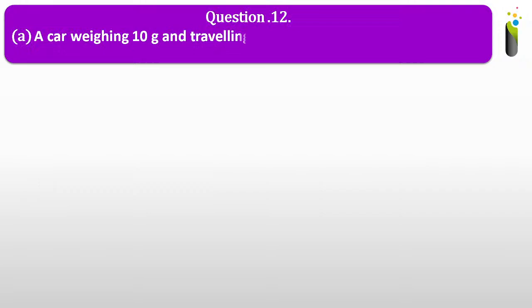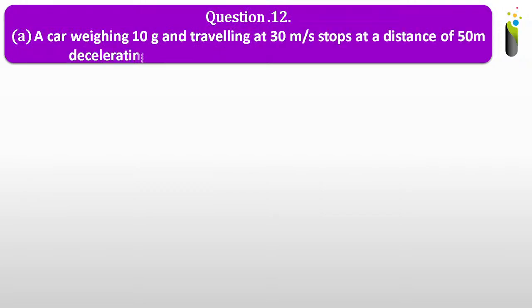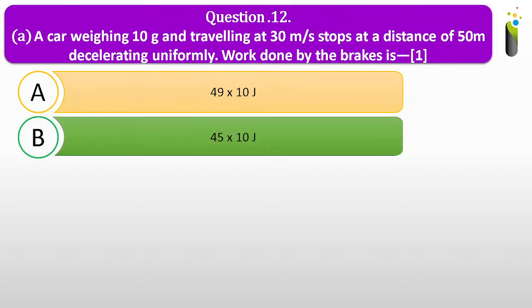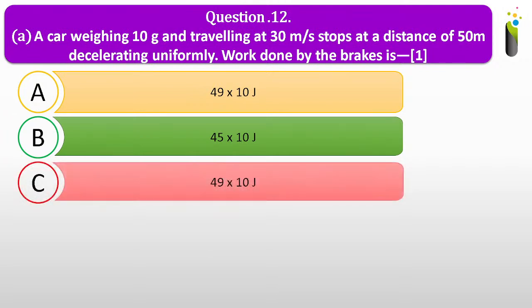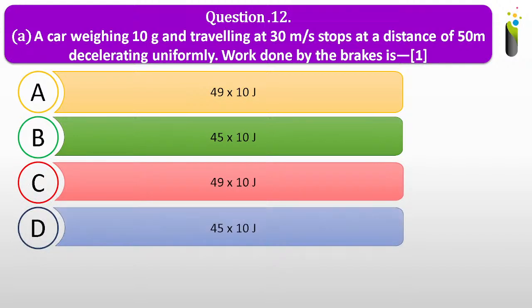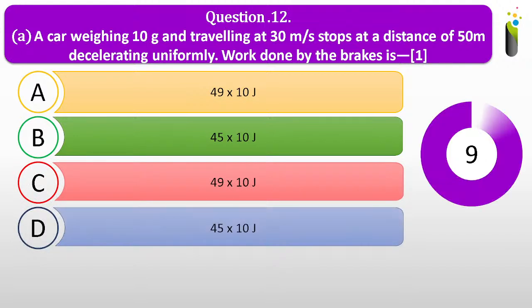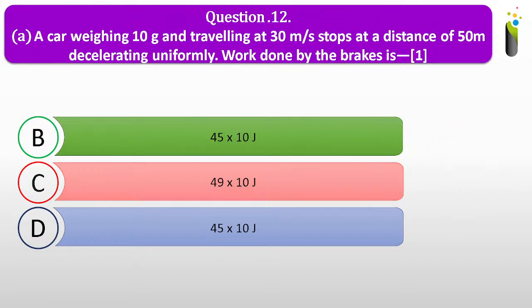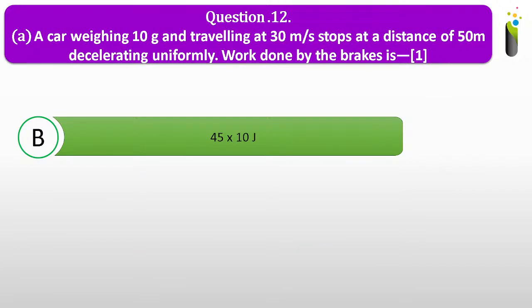Question number twelve. A car weighing 10 kg and traveling at 30 meters per second stops at a distance of 50 meters decelerating uniformly. Work done by the brakes is dash. The answer is 45 × 10 joules.